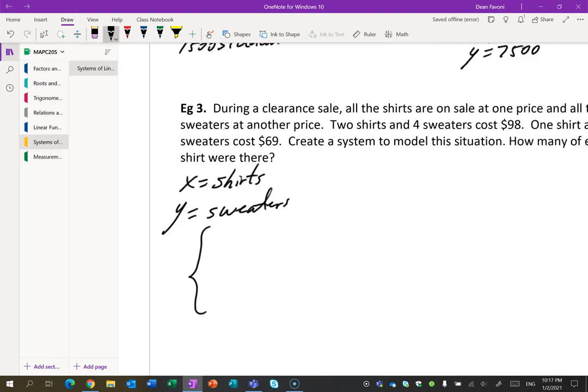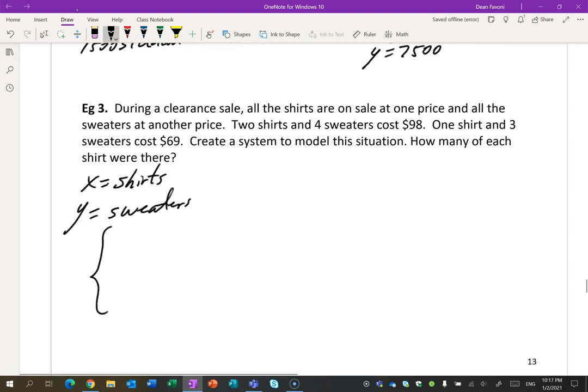This is what I had. Two shirts, four sweaters is 98. One shirt, three sweaters, 69. There you go. That's line 1, that's line 2.